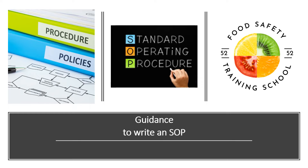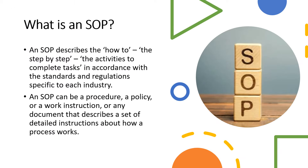This guidance is focused on learning about the elements or sections of a documented SOP and how to write them in order to ensure consistency in daily operations and produce safe and quality products. An SOP is a document that describes the how-to, the step-by-step activities to complete tasks in accordance with the standards and regulations specific to each industry. An SOP can be a procedure, a policy, an instruction, or any document that describes a set of detailed instructions about how a process works.